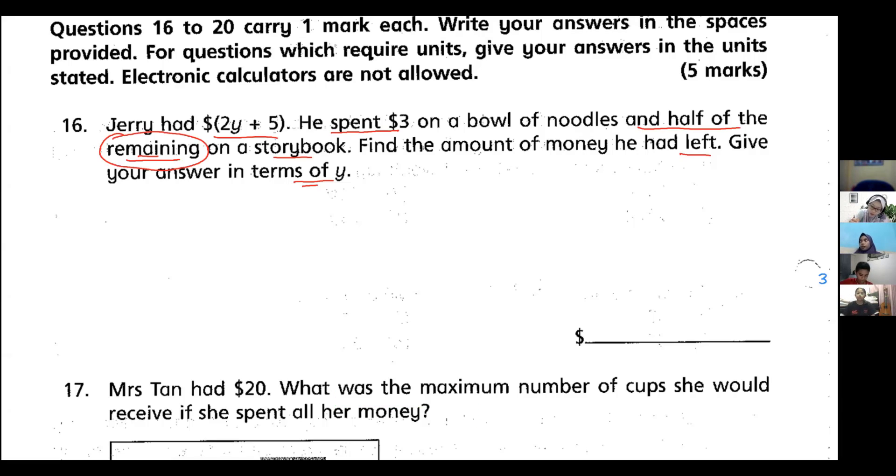This is your first step: find out the remainder. The remainder will be $(2y + 5) - $3. To do this, put the dollar sign on its own, take out the bracket: 2y + 5 - 3. This equals $(2y + 2). So this is my remainder. I do not stop there because I want to find how much I spent on the storybook.